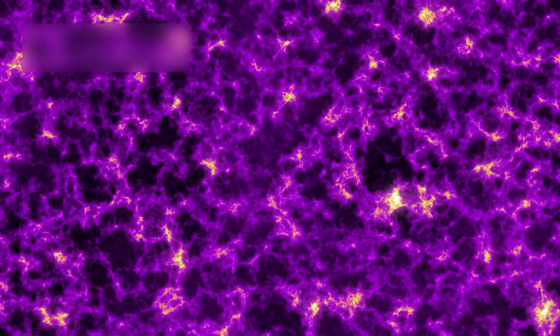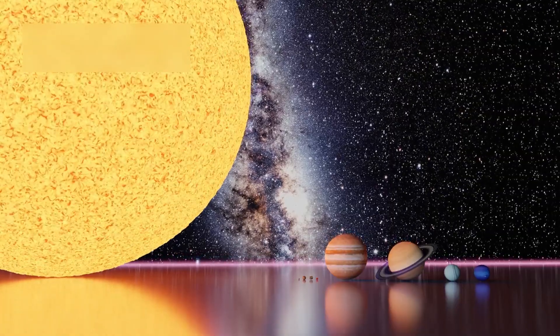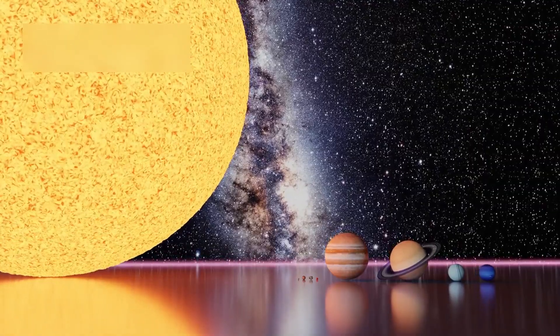This web is made of filaments, voids, and clusters, shaped over time by gravity. Though our solar system feels massive, it's tiny compared to the Milky Way.